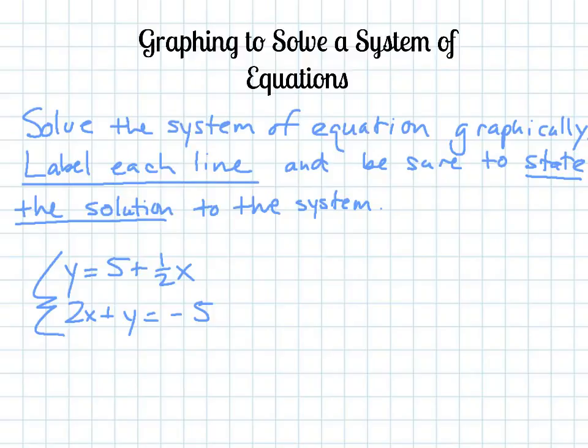What this means is that you graph both lines that are given to you, and depending on how your lines intersect or don't intersect determines how many solutions you have. Remember, if they intersect once, then there should be one solution, and you should state that.